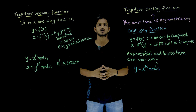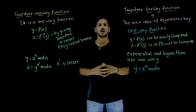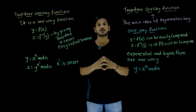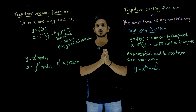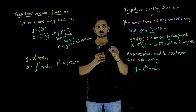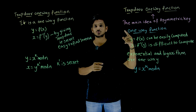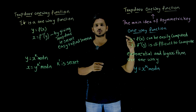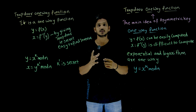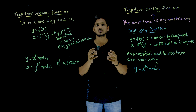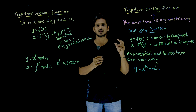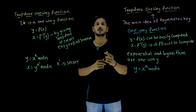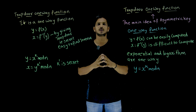Hi, welcome to Learning Monkey. I am Ragu. In this class we'll discuss about trapdoor one-way function. This is the concept which we are going to use in asymmetric key cryptography. In our previous class we clearly discussed some basic ideas about asymmetric key cryptography — please watch that class and come back here. The link for the playlist is provided in the description below.